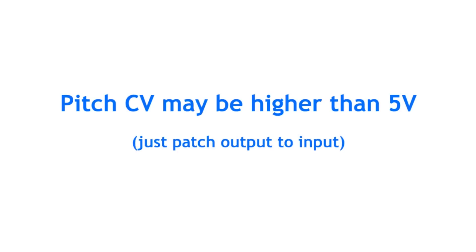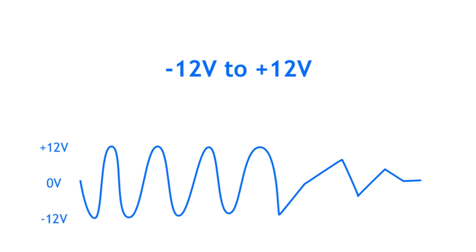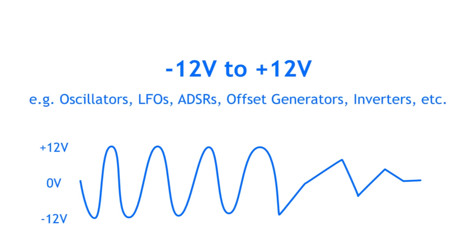In general, all modules should be safe to operate with voltages between minus 12 volts and plus 12 volts, so don't be afraid to experiment as long as you patch outputs to inputs. There are also 0 to minus 12 volts available. Oscillators usually swing back and forth from negative to positive voltages, and there are also voltage inverter modules, voltage offset modules, and so on, so that you can process control voltages in various ways.